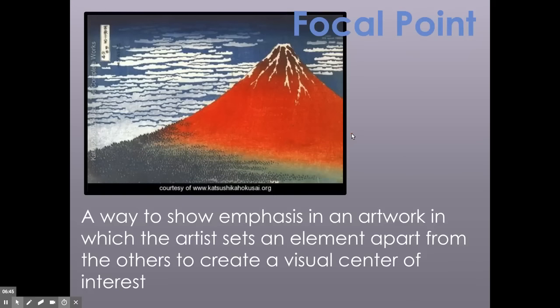A focal point — a way to show emphasis in an artwork in which the artist sets an element apart from the others to create a visual center of interest. Immediately, when you look at this print by Hokusai, a Japanese printer, we immediately know that the focal point here is the mountain — Mount Fuji. It's actually a volcano, and it's red-orange, so we can almost imagine the lava building up inside of it. It contrasts so much against the peaceful, cool colors in the background. This warmness really makes the volcano stand out, and we know that this is the focal point of the painting. It is very obvious that this is the most important part for the artist — he wants this to pop out. And you're going to be seeing focal points in art a lot later on in class.